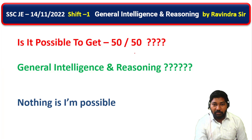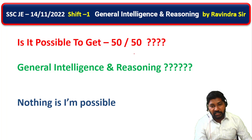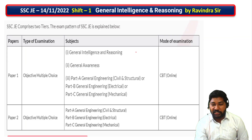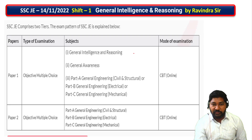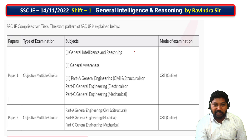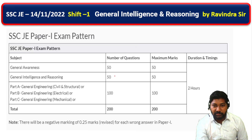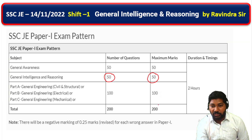Nothing is impossible. If you are aware of the exam pattern, syllabus, guidance, material, classes, mock tests, and the online platform, you can get 50 out of 50 — it is very easy. That is the exam pattern. SSC JE Tier 1, Paper 1, first topic is general intelligence and reasoning. The subject total is 50 marks, maximum 50 marks out of 200 marks. Full marks — it is very helpful.